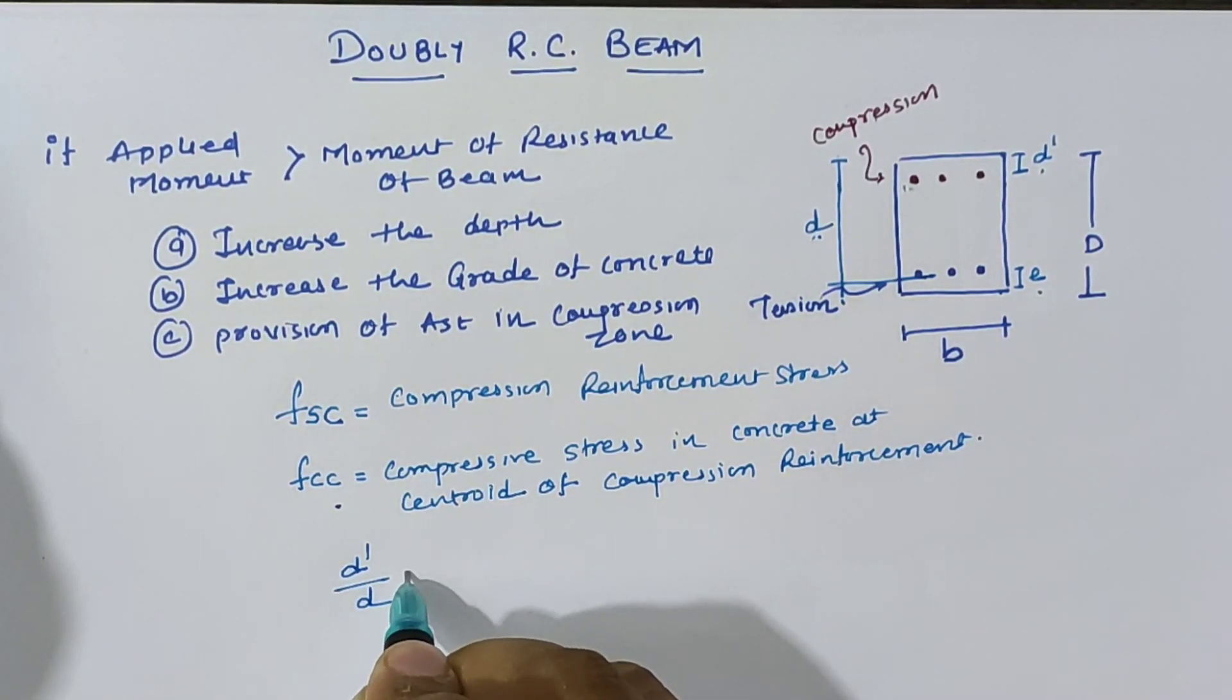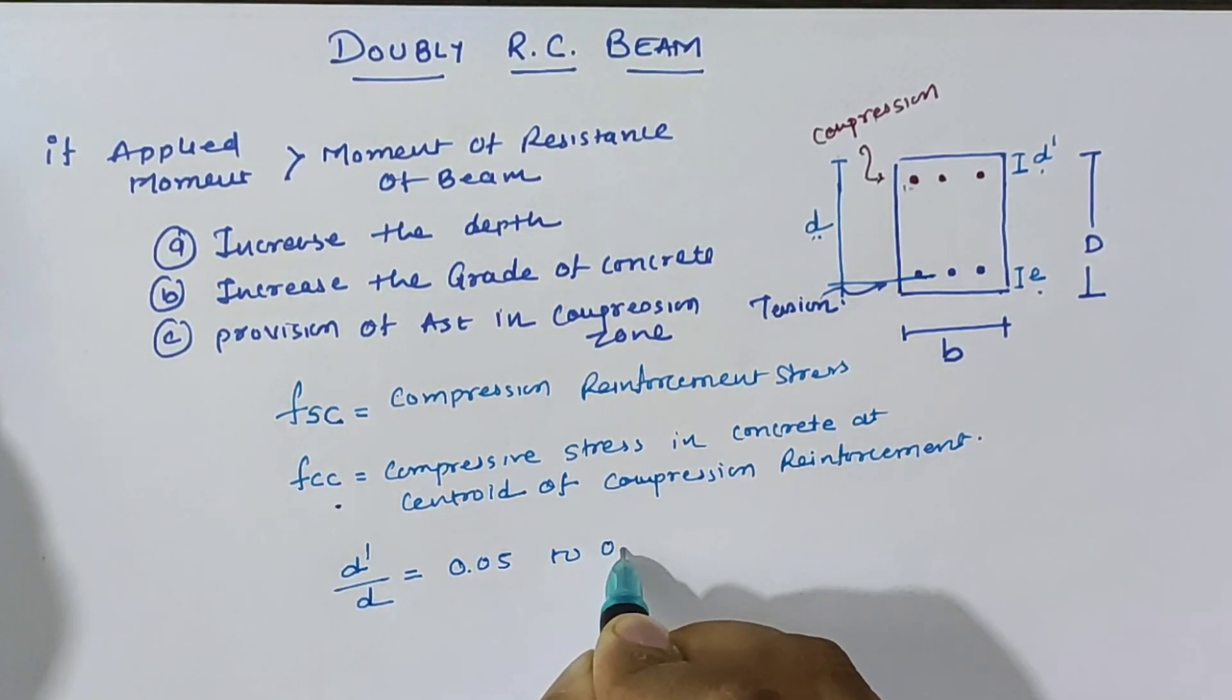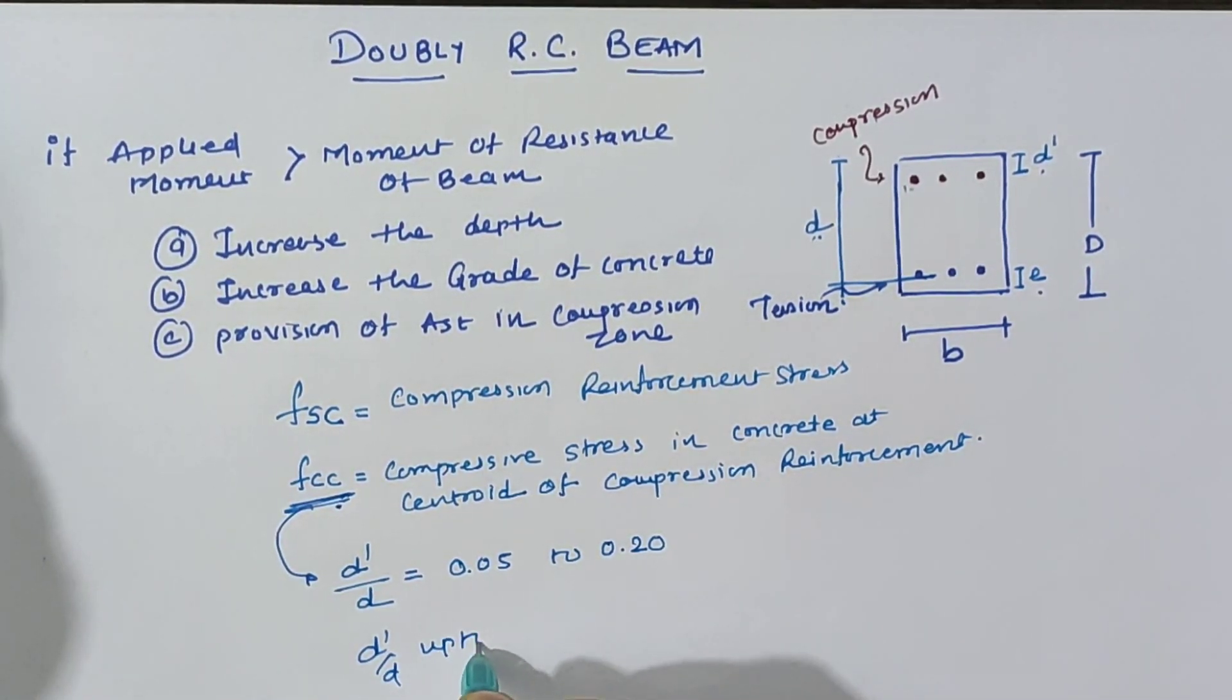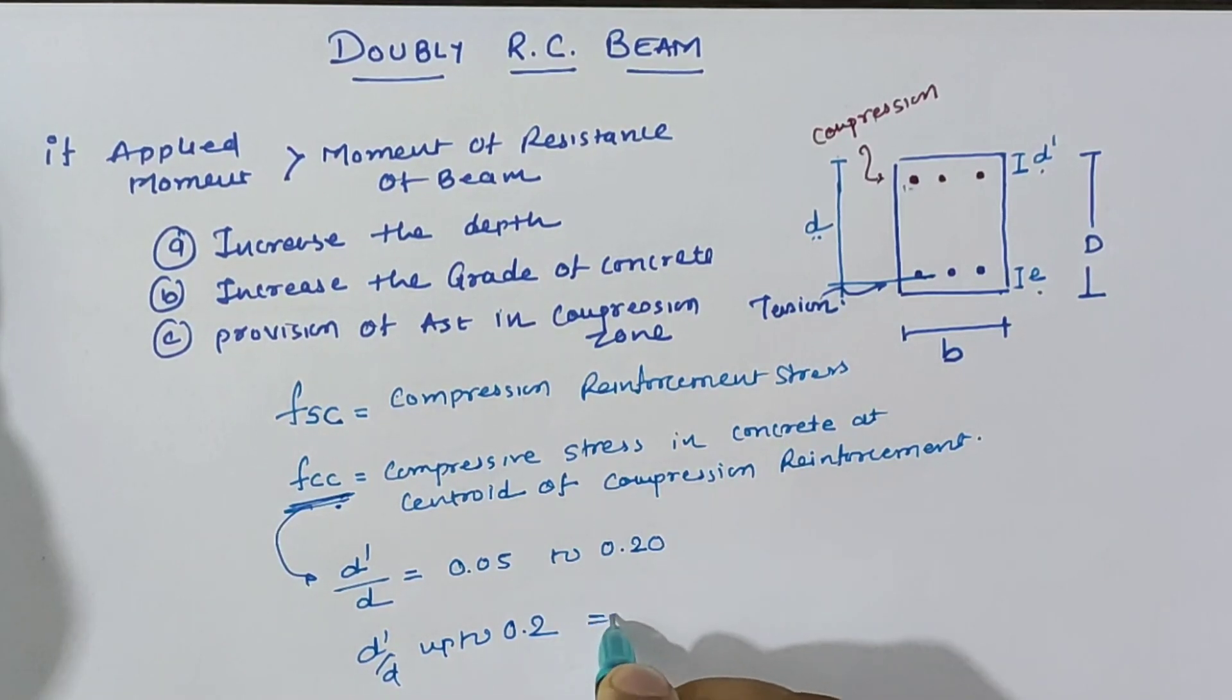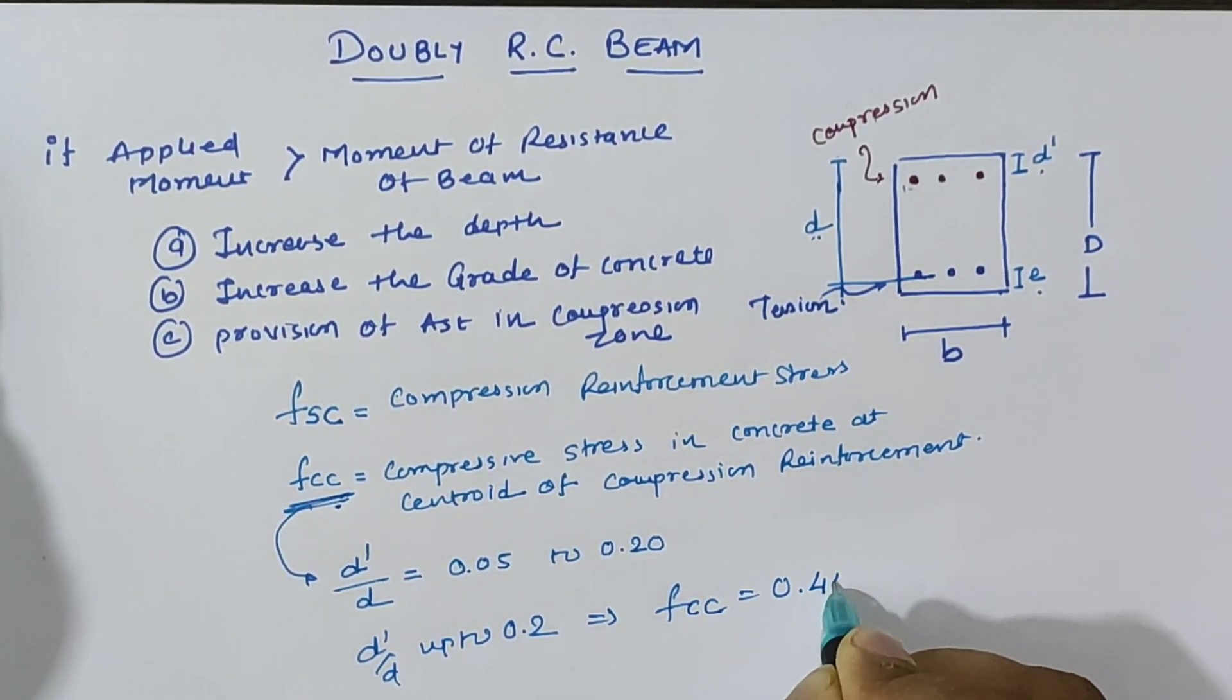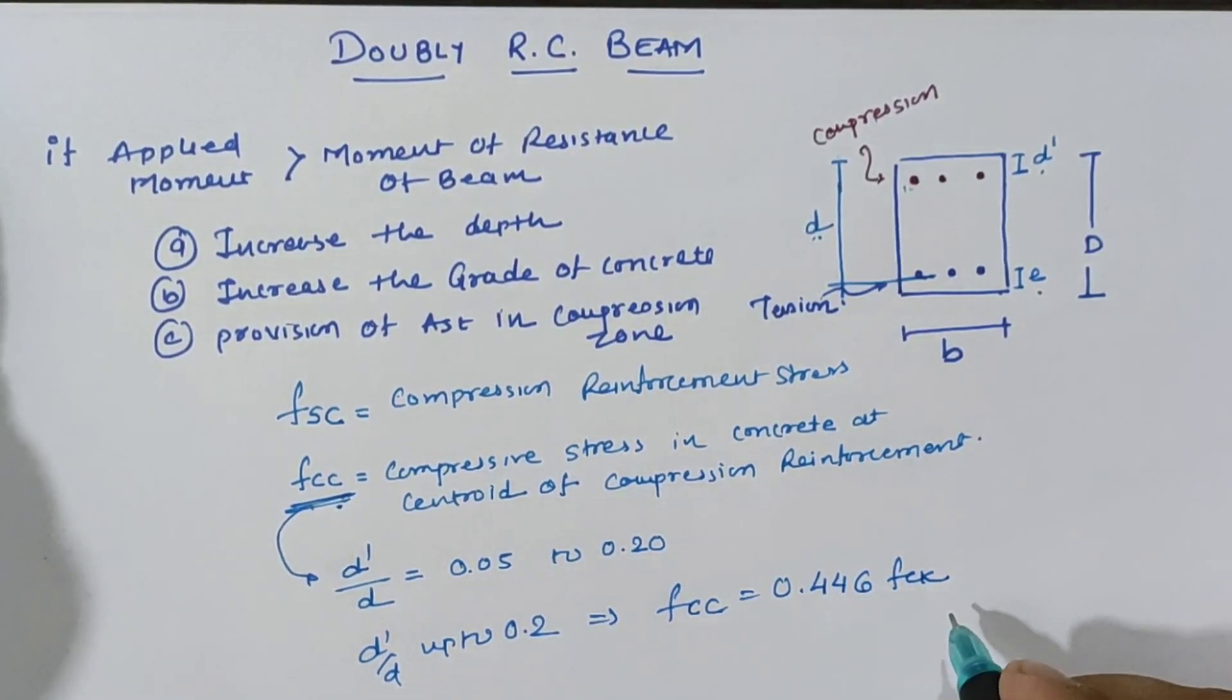Now d' by d ranges from 0.05 to 0.2 according to different types of calculations. fcc up to 0.2 is calculated by 0.446 times fck in any type of calculation.